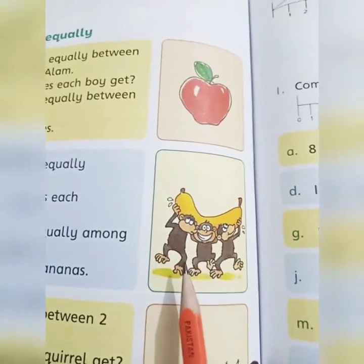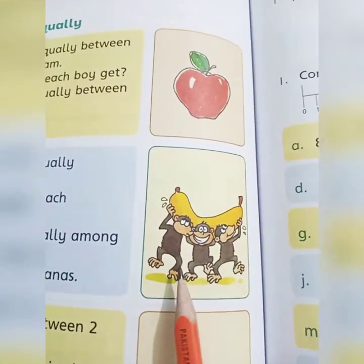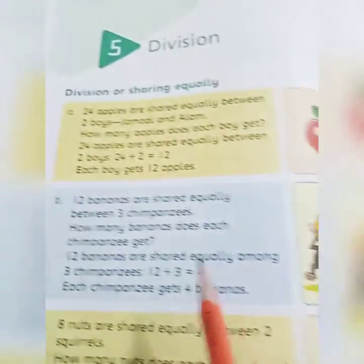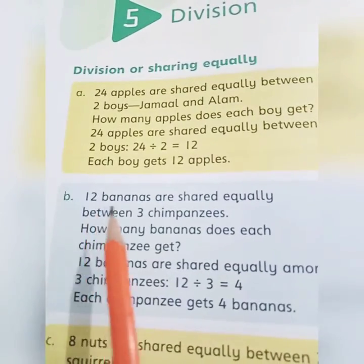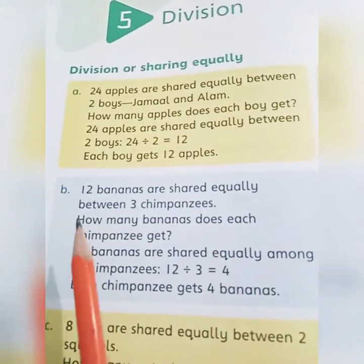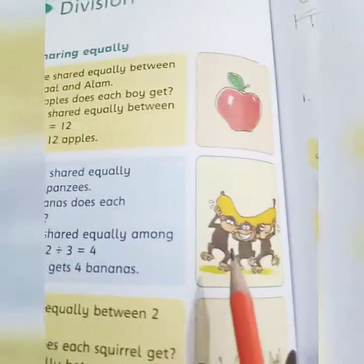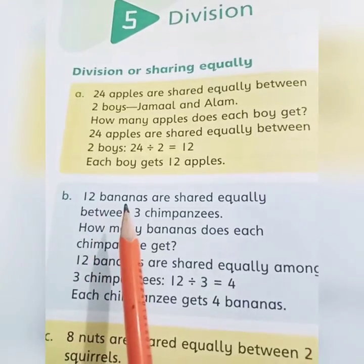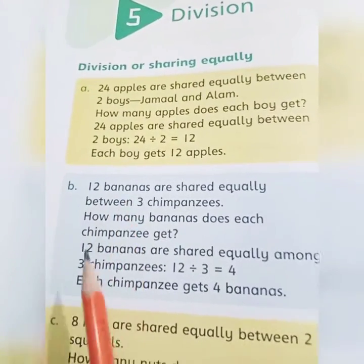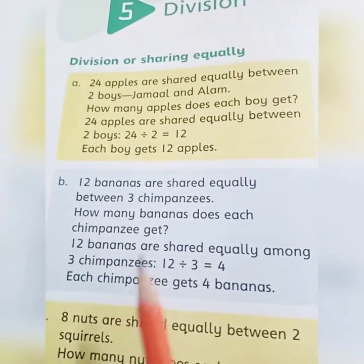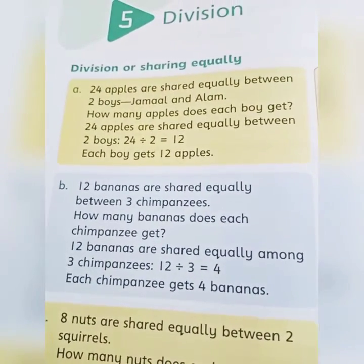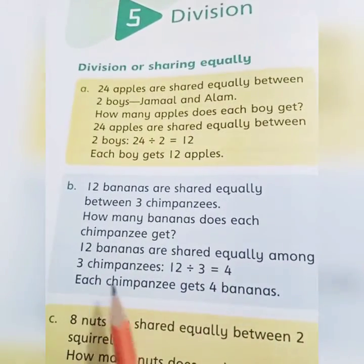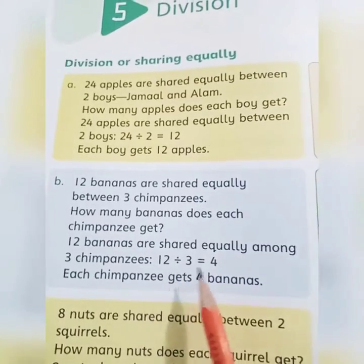Now let's see the next example — it will be clearer, inshallah. These are monkeys carrying bananas. You know banana is a favorite of monkeys. Let's read the story: 12 bananas are shared equally between 3 chimpanzees. So, how many bananas are shared equally among 3 chimpanzees?